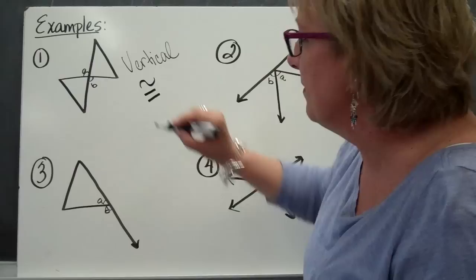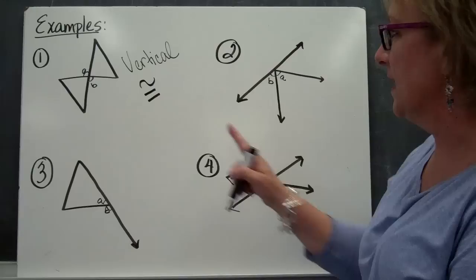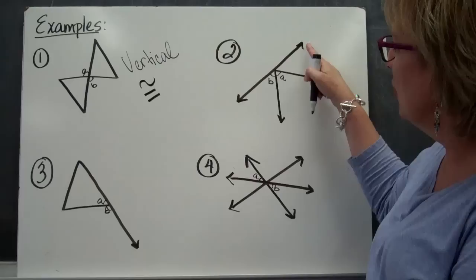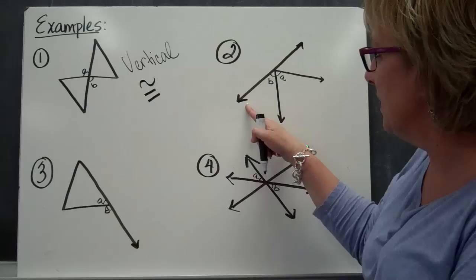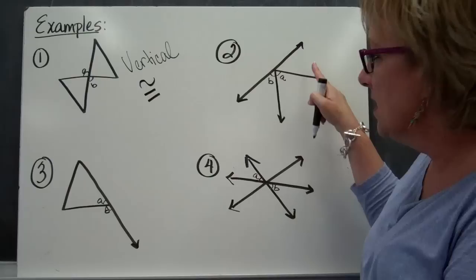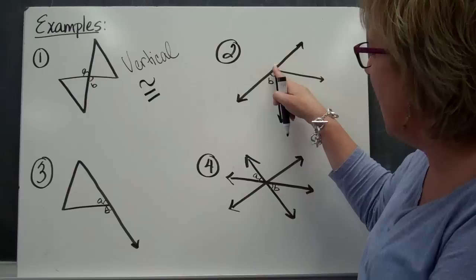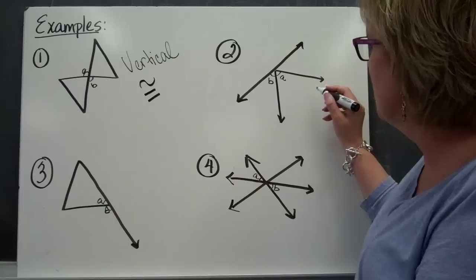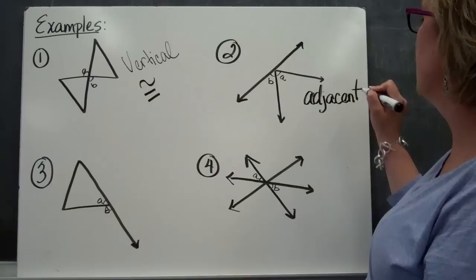Congruent means they are going to equal the same amount of degrees, so A and B are vertical and congruent — and this is the sign for congruent. Here, we have a straight line, but that's going to throw you off a little bit because we are looking at angle A and B. If I look at angle A and B in this case, they share the same vertex or point, they share the same sides, and they're side by side. So these are called adjacent — they are side by side. That is considered an adjacent angle, so don't let this other angle throw you.